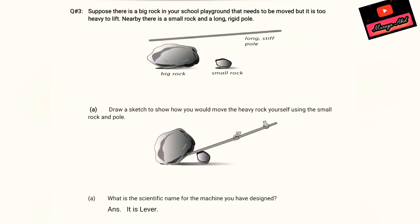Now be ready for question number three — you have to draw a diagram. Suppose there is a big rock in your school playground that you need to move. A big rock is there, a small rock is there. I have arranged it for you in the diagram — you have to draw this diagram, and your part A will be done. The second question asks: what is the scientific name for the machine you have designed? It's a lever — and it's a first-class lever.